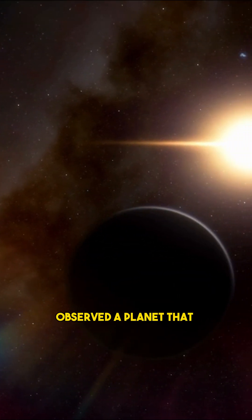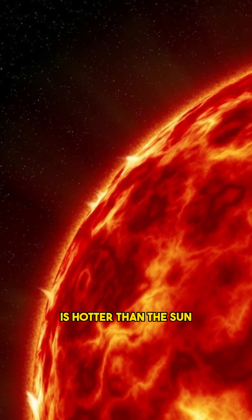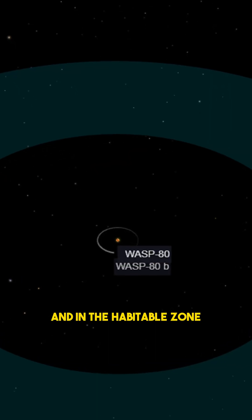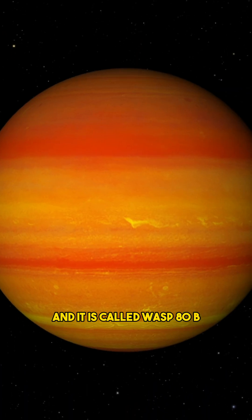James Webb Space Telescope has just observed a planet that is hotter than the Sun, bigger than Jupiter, and in the habitable zone of its star, and it is called WASP-80b.